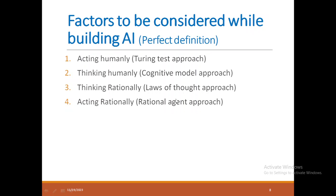Coming to the proper definition — if you want to build a perfect AI system, it should act like a human, it should think like a human, it should think rationally, and it should act rationally.